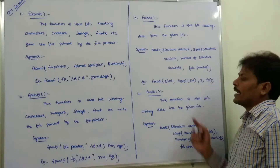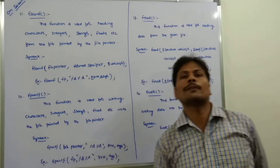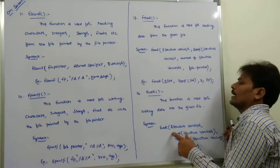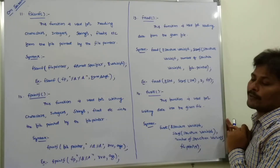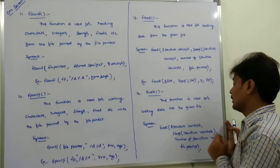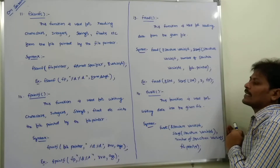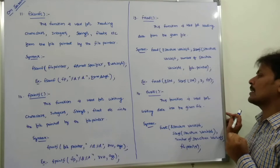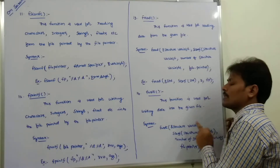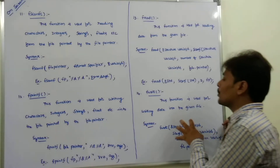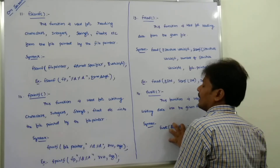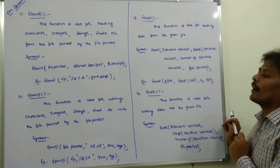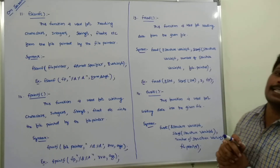The next function is fwrite. This function is used for writing data into the given file. The syntax is: fwrite(&structure_variable, sizeof(structure_variable), number_of_structure_variables, fp); These four parameters are taken by the fwrite function. By using this syntax, we can write integer data, character data, or floating point data into the corresponding file.